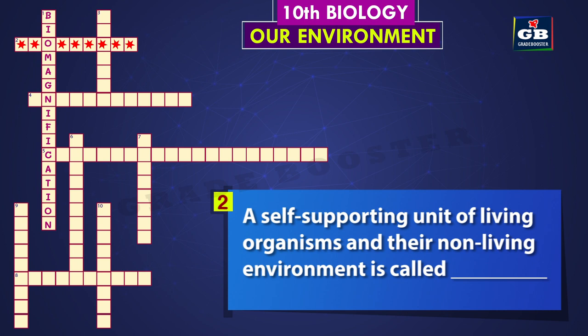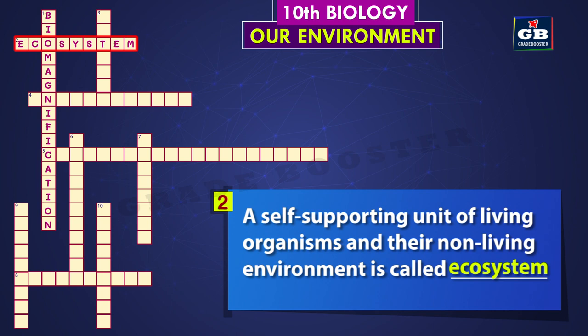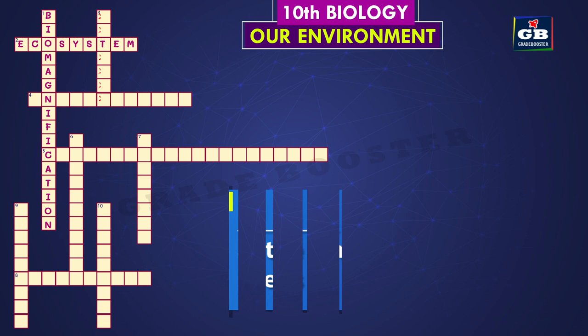Two across: a self-supporting unit of living organisms and their non-living environment is called dash. The right answer is ecosystem. A self-supporting unit of living organisms and their non-living environment is called ecosystem.